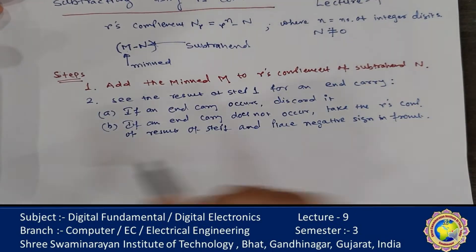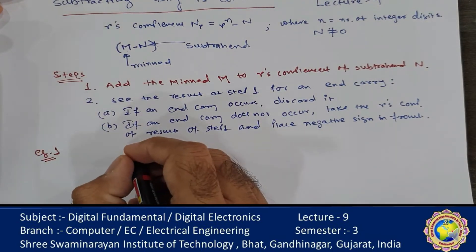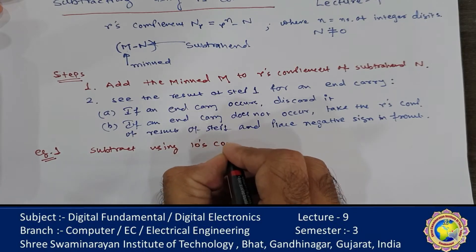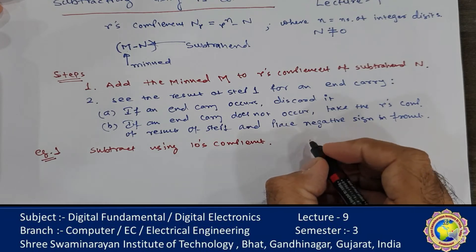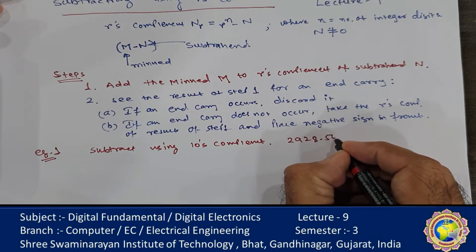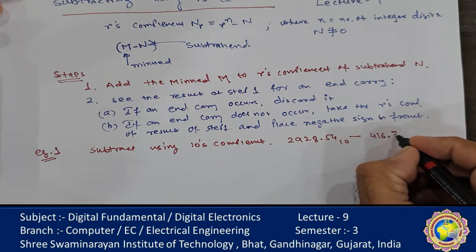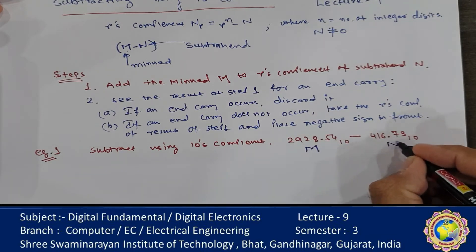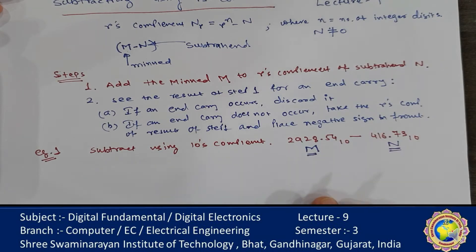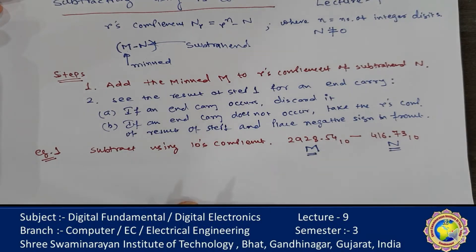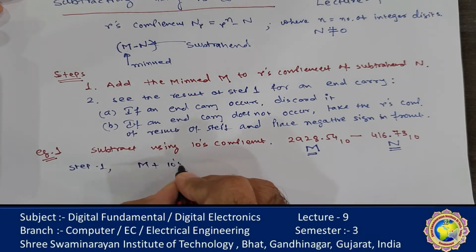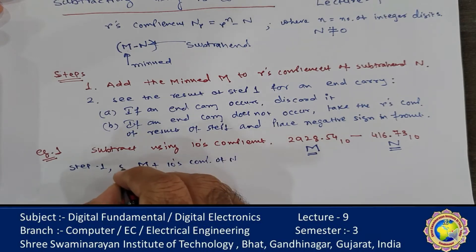Example 1: Subtract using 10's complement. The numbers given are 2928.54 decimal minus 416.73 decimal. Here M = 2928.54 is the minuend and N = 416.73 is the subtrahend. Since 2928 is greater than 416, the result is positive. As per step 1, S = M plus 10's complement of N.